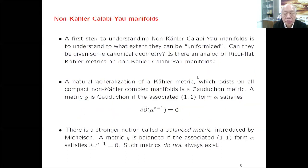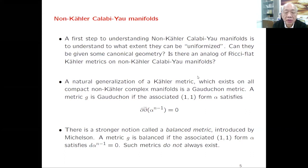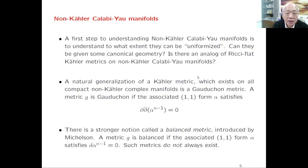The first question in order to apply metric geometry to non-Kähler manifolds is to understand what kind of uniformization we can do for this geometry—how do we get a canonical metric on such geometry? The question is to find an analog of the Ricci-flat Kähler metric on non-Kähler manifolds. That was a motivation for me.